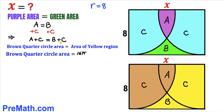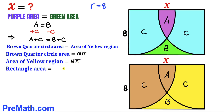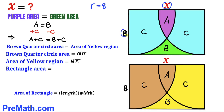The area of the brown quarter circle equals the area of the yellow region, so the area of the yellow region is 16 pi as well. Now let's calculate the area of the rectangle. Using the formula area equals length times width, where length is x and width is 8, the area of the rectangle is 8x.